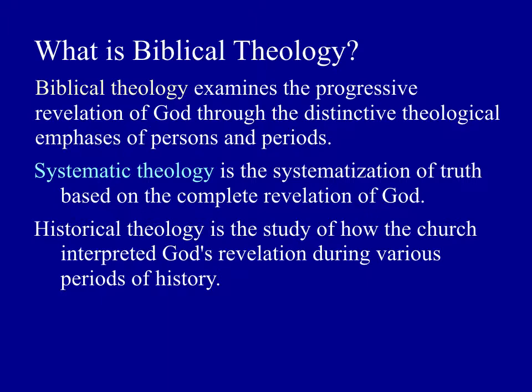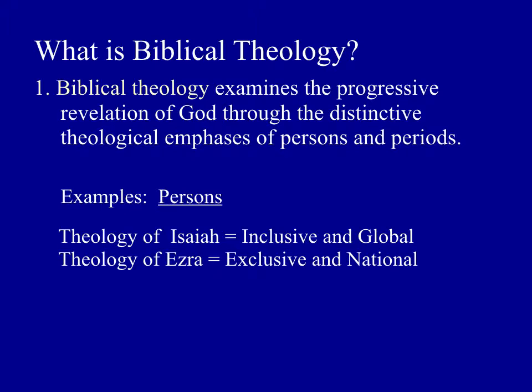Let me give you some examples of biblical theology to illustrate this. Take the theology of Isaiah — or at least the first 40 chapters — and compare it with the theology of the book of Ezra. These two have distinct theological perspectives. Isaiah has a strong global and universal focus; he envisions God's salvation going out to all the nations. The nations are described as streaming to Jerusalem to worship God. So Isaiah has a very inclusive, global vision of salvation.